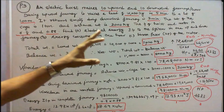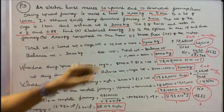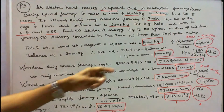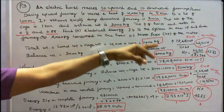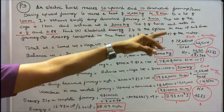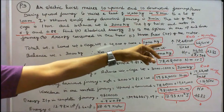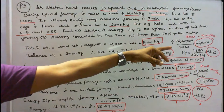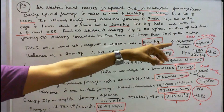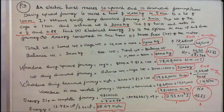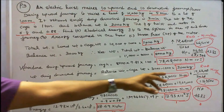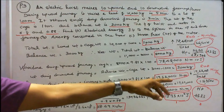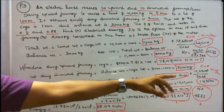Next, we find the shaft power of the motor. Rate of work done during upward journey is equal to 78,48,000 divided by 5 into 60 seconds, that is equal to 26,160 watts. Rate of work done during downward journey is equal to 19,62,000 divided by 2 into 60, that is equal to 16,350 watts.